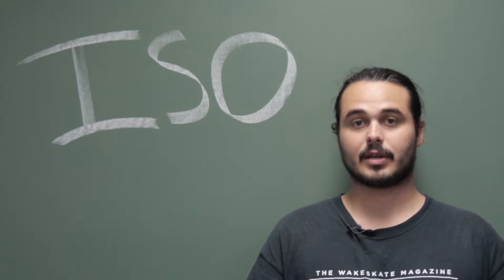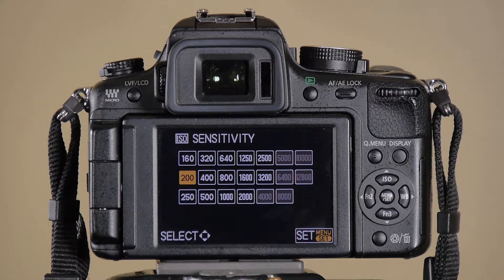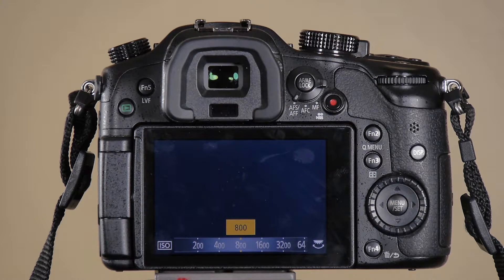The sensor's sensitivity is determined by an ISO number that you choose. Different cameras offer different specific numbers for ISO settings, but generally they will range from the 100s to the 1000s. The higher your ISO, the more sensitive your sensor will be to the light. This means that if your conditions are very dark, you'll want your sensor to be very sensitive to the little light that you do have, so you'll turn the ISO higher. Conversely, if your conditions are very bright, you can decrease the sensitivity of your sensor by lowering the ISO.